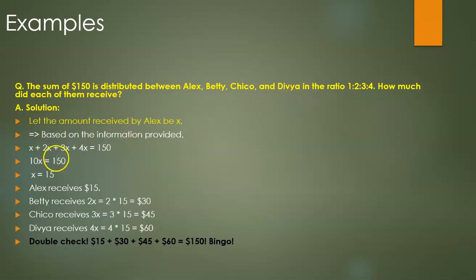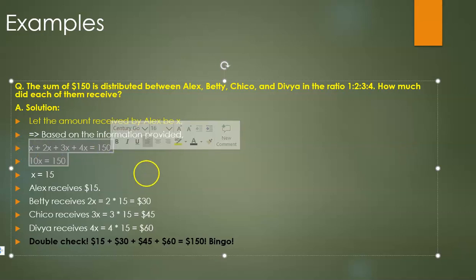Similarly, Chico would have received 3x and Divya 4x. So now we have an equation that we can solve. Based on the information provided, we know that the sum of all the amounts equals 150.